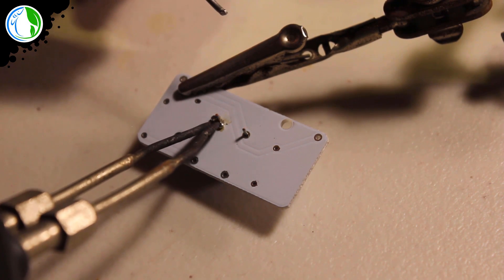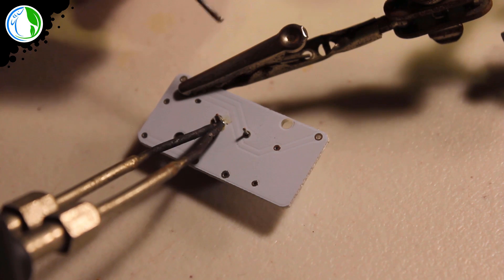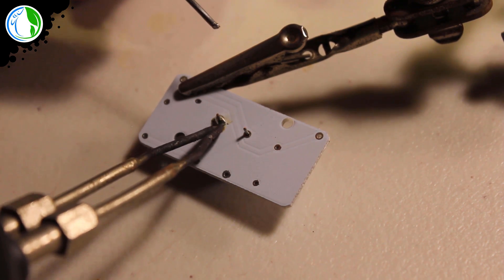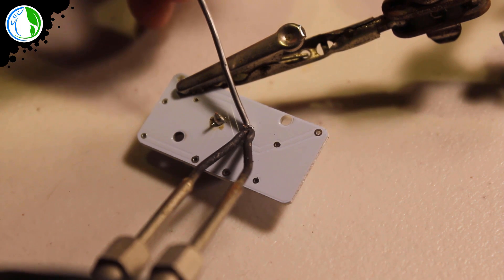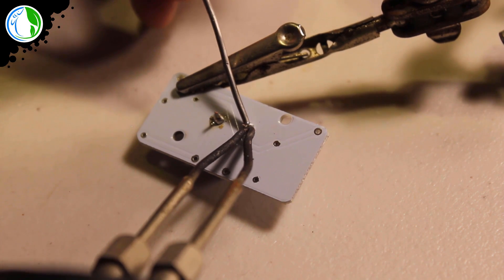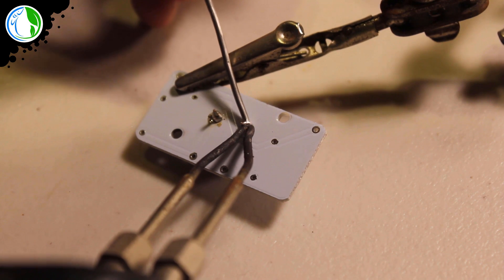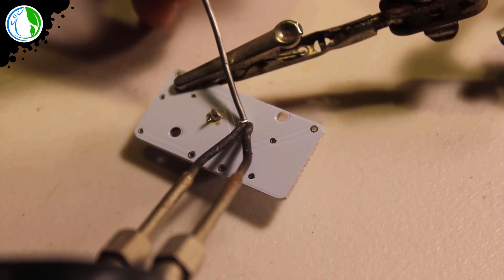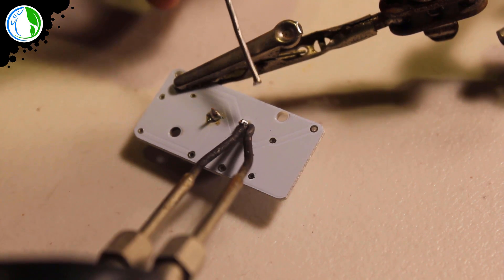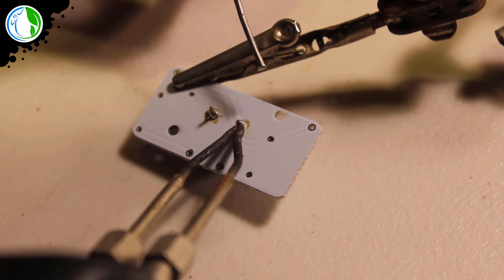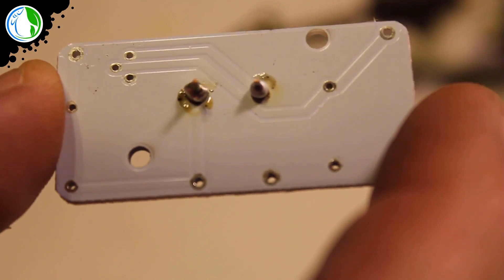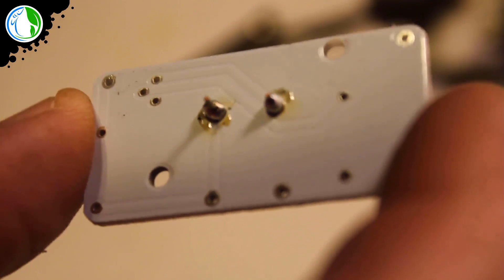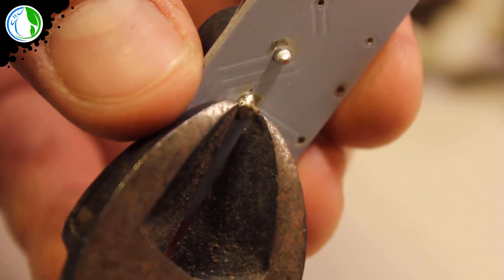I'm going to go ahead and start by soldering on the buzzer. The key to a good solder job involves keeping the solder and the soldering iron at a 90 degree angle from each other. There we go. Looks pretty good. Now we can go ahead and clip off the excess pins from the buzzer.